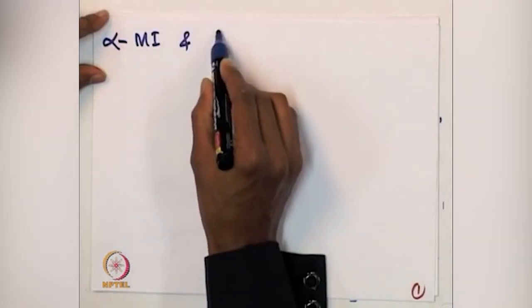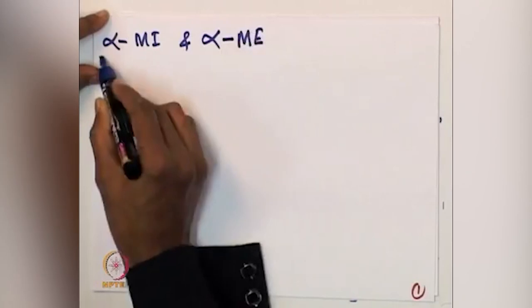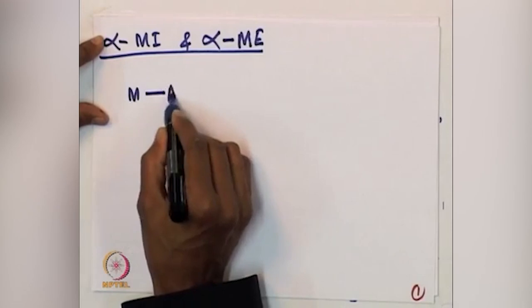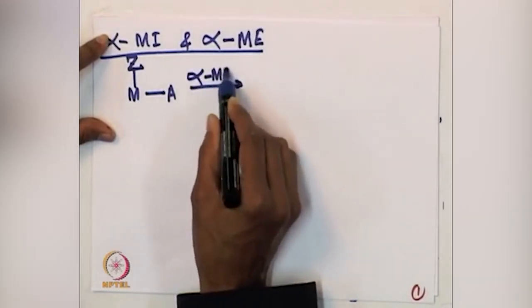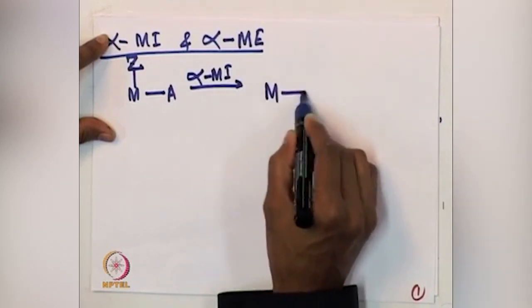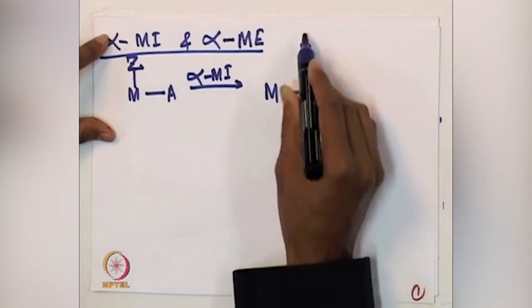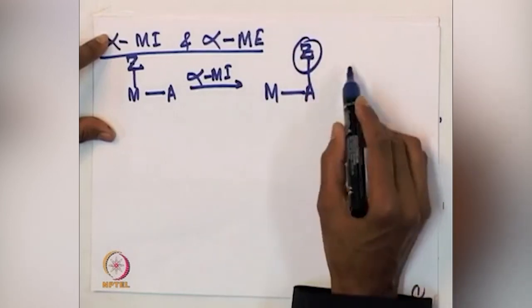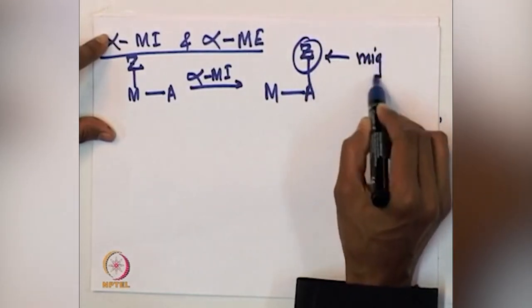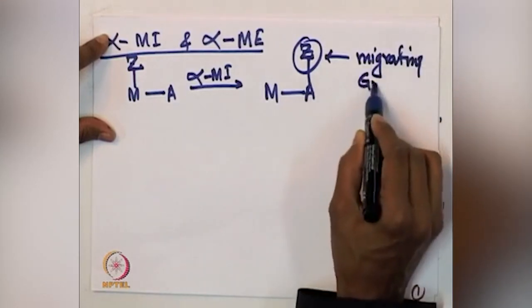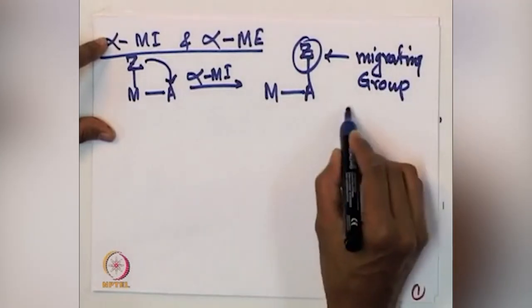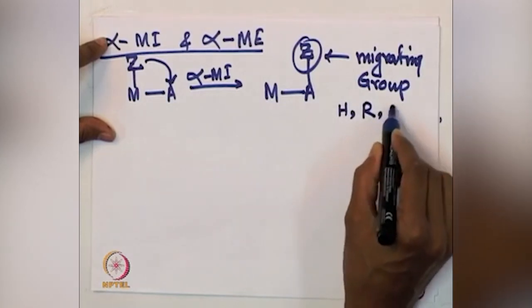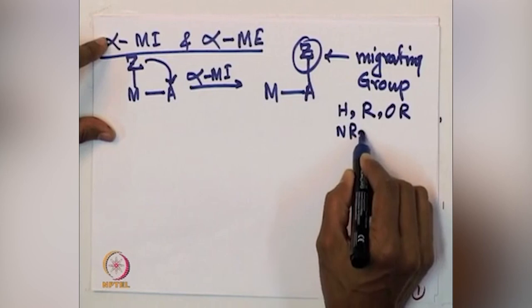We will have a metal complex of the organometallics type, where A and Z are involved. For alpha migratory insertion, it is the forward reaction where an M-A and M-Z bond formation is happening. Z is the migrating group. Usually Z is something like H (hydride), R (alkyl), alkoxide, NR2, et cetera.